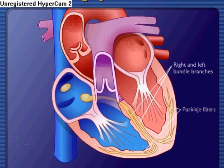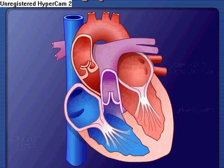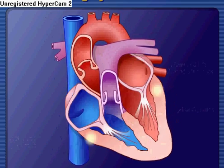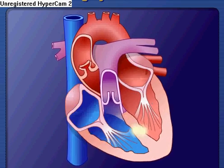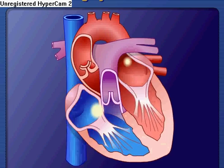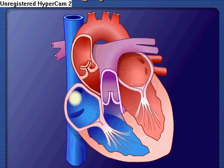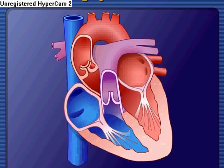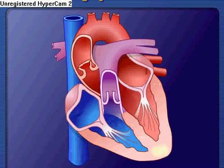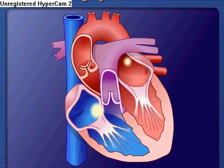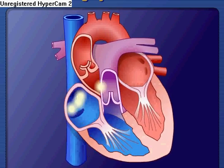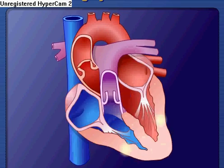The rapid conduction from the atrioventricular bundle to the ends of the Purkinje fibers allows the ventricular muscle cells to contract in unison, providing a strong contraction.